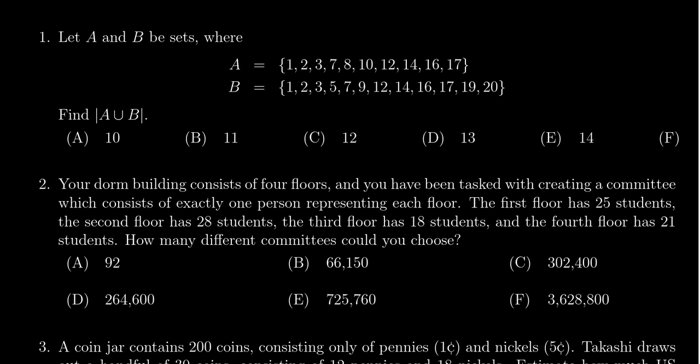You'll notice that A and B both contain 1, 2, 3, 7, 12, 14, 16, and 17. Every other element is unique. A has an 8 and a 10 that B doesn't, but B has a 5 and a 9 and 19, 20. Those other elements I slashed out showed up in both sets.